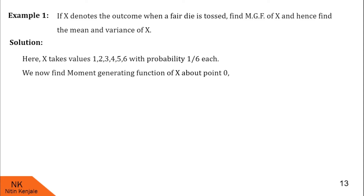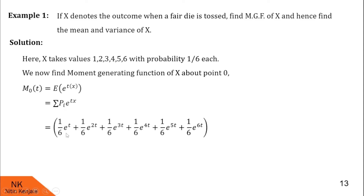Now we find the moment generating function of x about 0. It is given by M(0,t) which equals E(e^(tx)). That is summation pi times e^(t·xi). Since xi values are 1 to 6 with pi equal to 1/6, we get (1/6)e^t + (1/6)e^(2t) + (1/6)e^(3t) and so on, up to (1/6)e^(6t). Taking 1/6 common, we get M(0,t) = (1/6)[e^t + e^(2t) + e^(3t) + ... + e^(6t)]. This is the moment generating function.